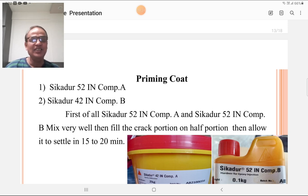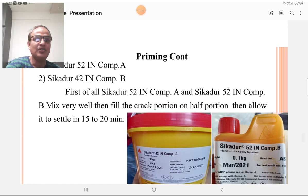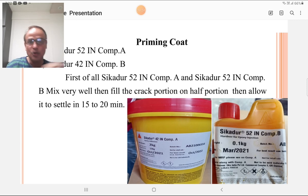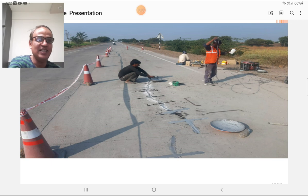For priming coat, Shikadur 52 in A and B, and Shikadur 42 in A and B are two types of priming coats used. First, Shikadur 52 in A and Shikadur 52 in B are mixed very well. Then fill the crack portion at half level or half portion and allow it to settle for 15 to 20 minutes. A and B are mixed and placed in the groove at the half portion and allowed to settle. These are the laborers carrying out this operation. This is the container used for mixing Shikadur A and B, and this is the crack where stitching is to be done.